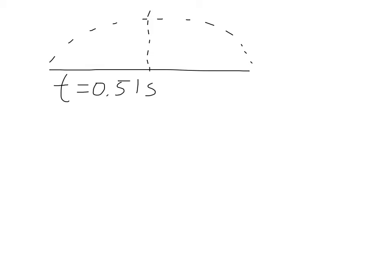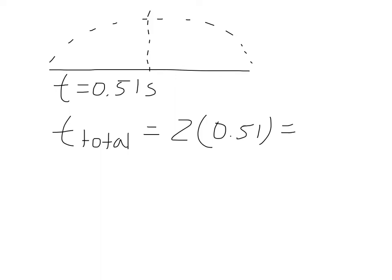This problem has the special case that the object is thrown from and returns to ground level. The time it takes to reach maximum height is the same as the time it takes to fall back down to Earth. If it took one second to go up, it takes one second to come down — so the total time equals two seconds. We found the time to reach maximum height as 0.51 seconds, so the total time in the air is 2 multiplied by 0.51, which equals 1.02 seconds.